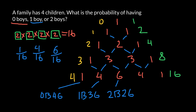Of course we can reduce these fractions. For example, 6 over 16 simplifies to 3 eighths, and 4 over 16 simplifies to 2 eighths or one quarter. The four in the row also stands for the probability of having three boys and one girl. And the last combination, the final one in the row, represents the probability of having four boys and zero girls.